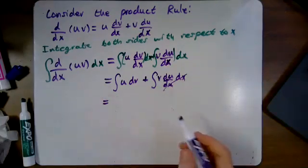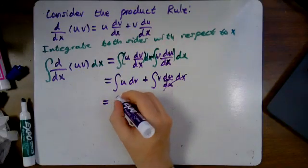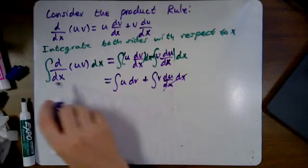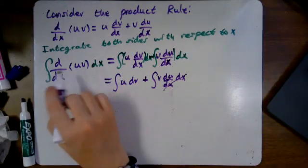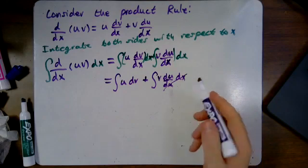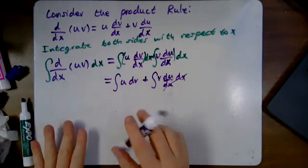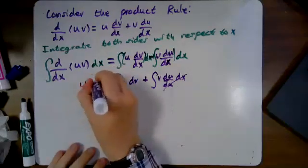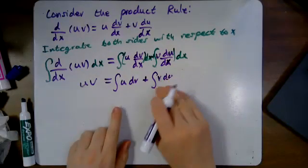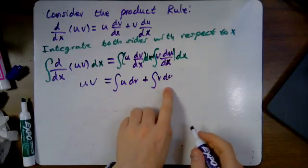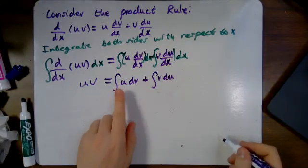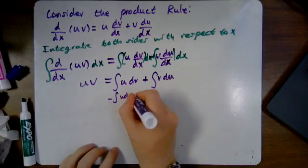The integral of u·dv is going to be simplified. On the left side, we're finding the integral of the derivative. The integral of a derivative is whatever we started with — integrals and derivatives are inverse processes. So this whole left side just becomes u·v. On the right side, the dx terms cancel, and we have the integral of u·dv plus the integral of v·du.